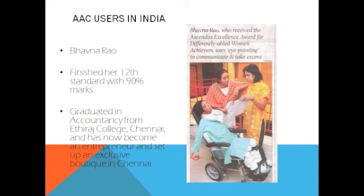We have many success stories. In India, Bhavna Rao is a typical example — she finished class 12 with 90% marks. She can't eat, speak, or walk, yet she completed her graduation and became an entrepreneur. All of this was possible because of her ability to communicate, which she achieved using her eyes alone — reading every single word and alphabet on a picture chart, her AAC tool.